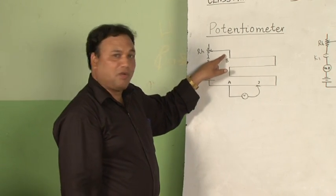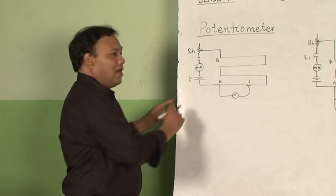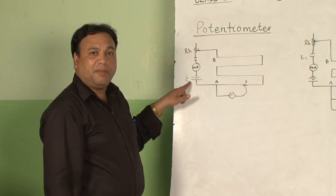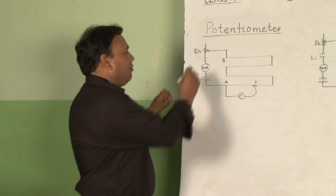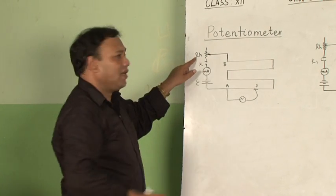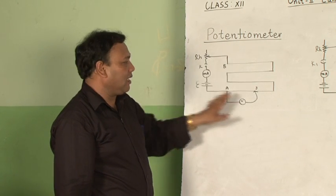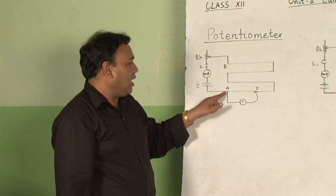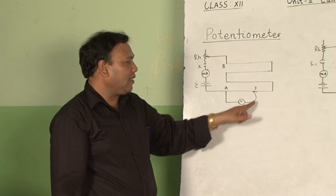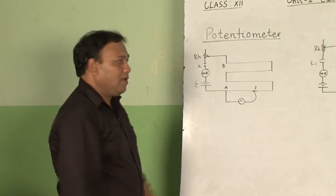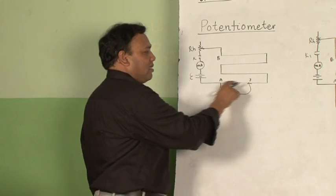This is point A and this is point B. At point A we have connected a battery of EMF E, along with a plug key and a rheostat. Point B is connected to the rheostat to complete the circuit. At point A we have also connected one voltmeter, and the second end of the voltmeter is connected to a jockey. By closing the key K, we can send a constant current through the wire A to B.